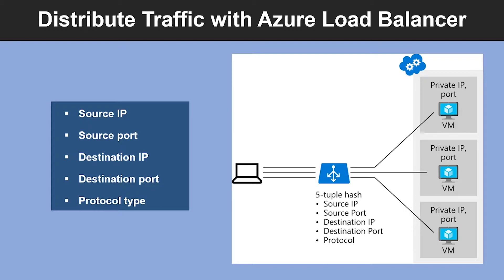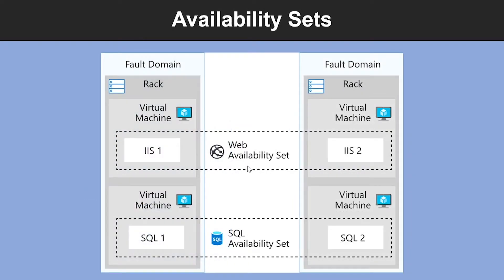Availability Set provides you with 99.95% SLA and Availability Zone gives you 99.99% SLA. Availability Set helps you protect from hardware failures within your data center. It is a logical grouping that you can use to isolate virtual machine resources from each other when they are deployed. Azure ensures that the virtual machines in an Availability Set run across multiple physical servers, compute racks, storage units, and network switches. If there is a hardware or software failure, only a subset of your virtual machines is affected.